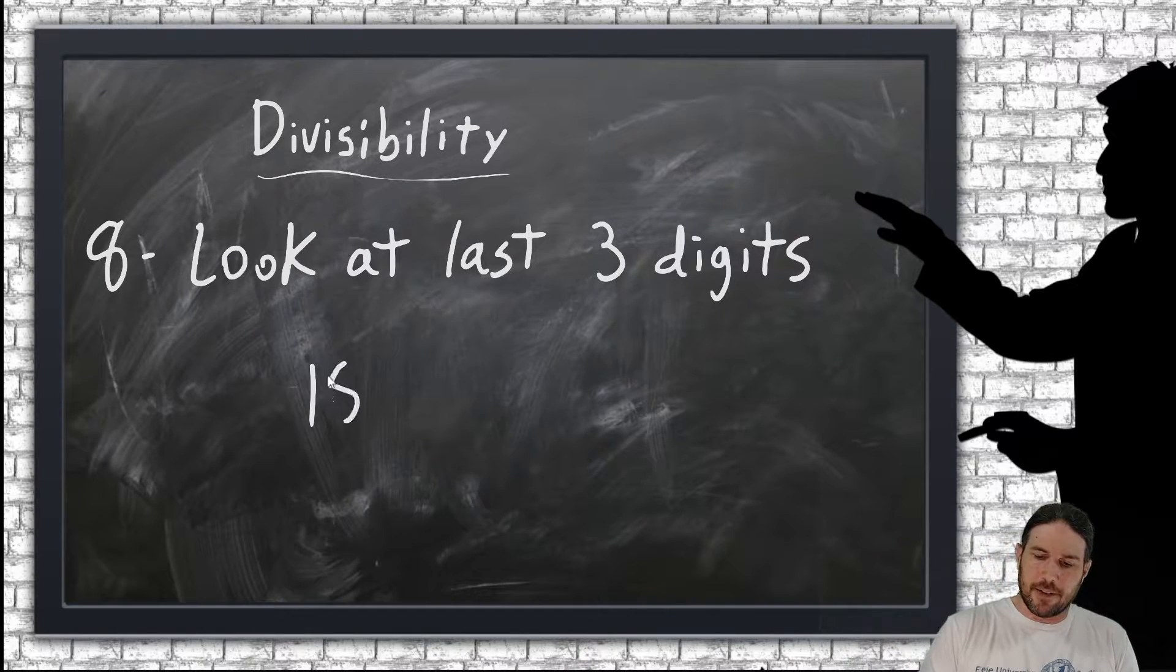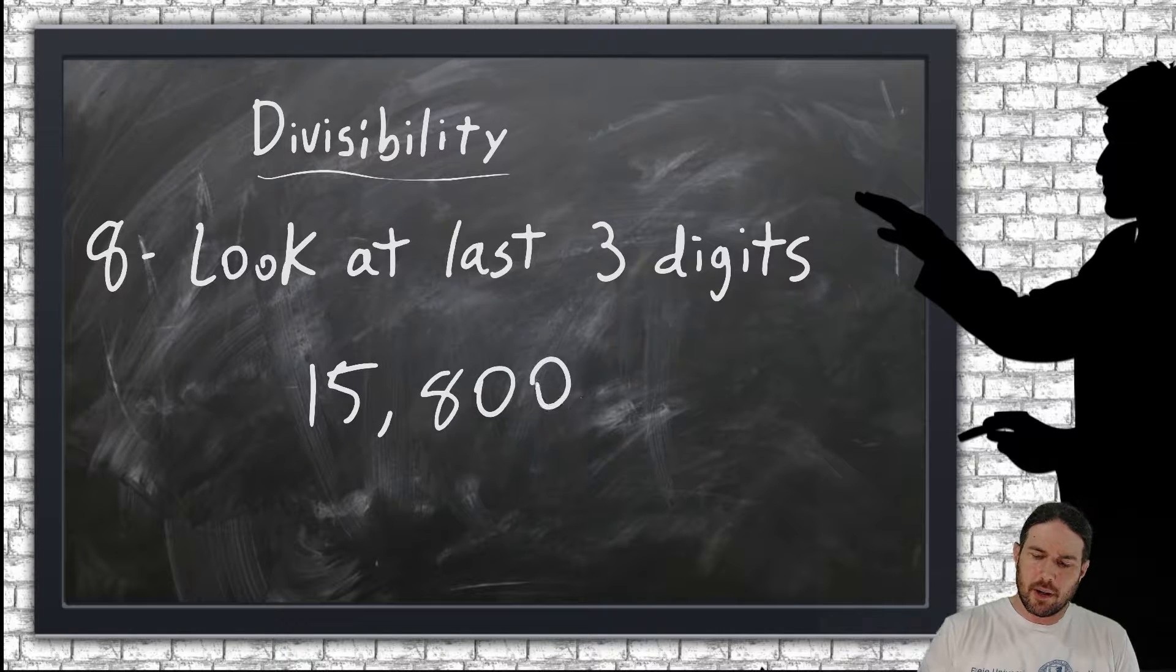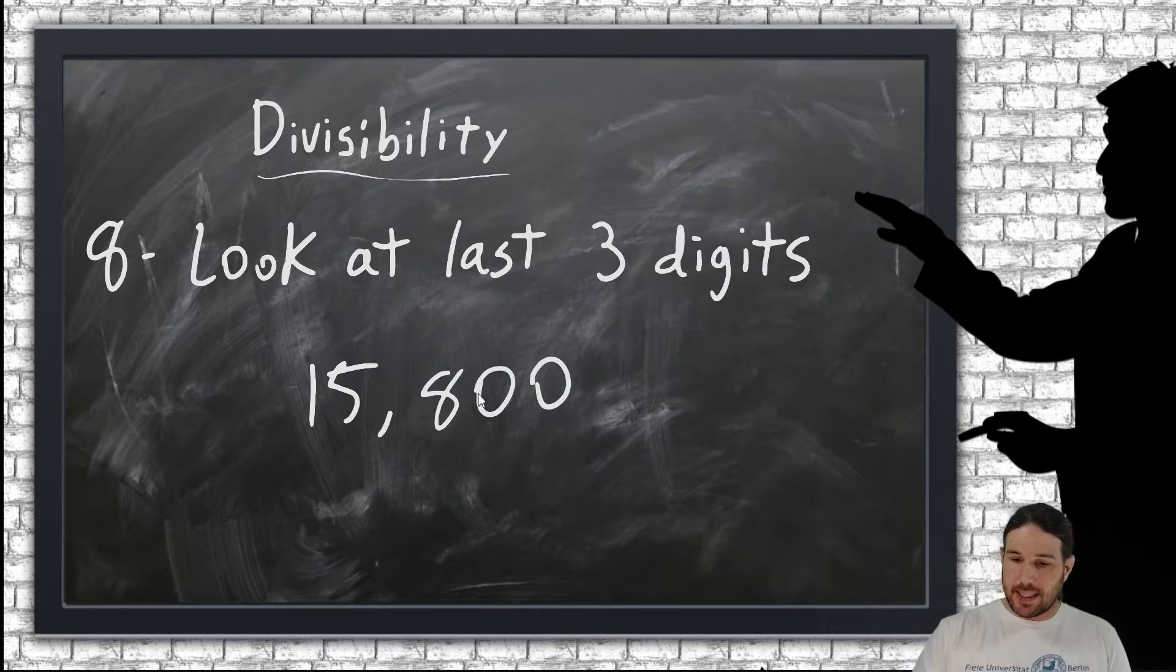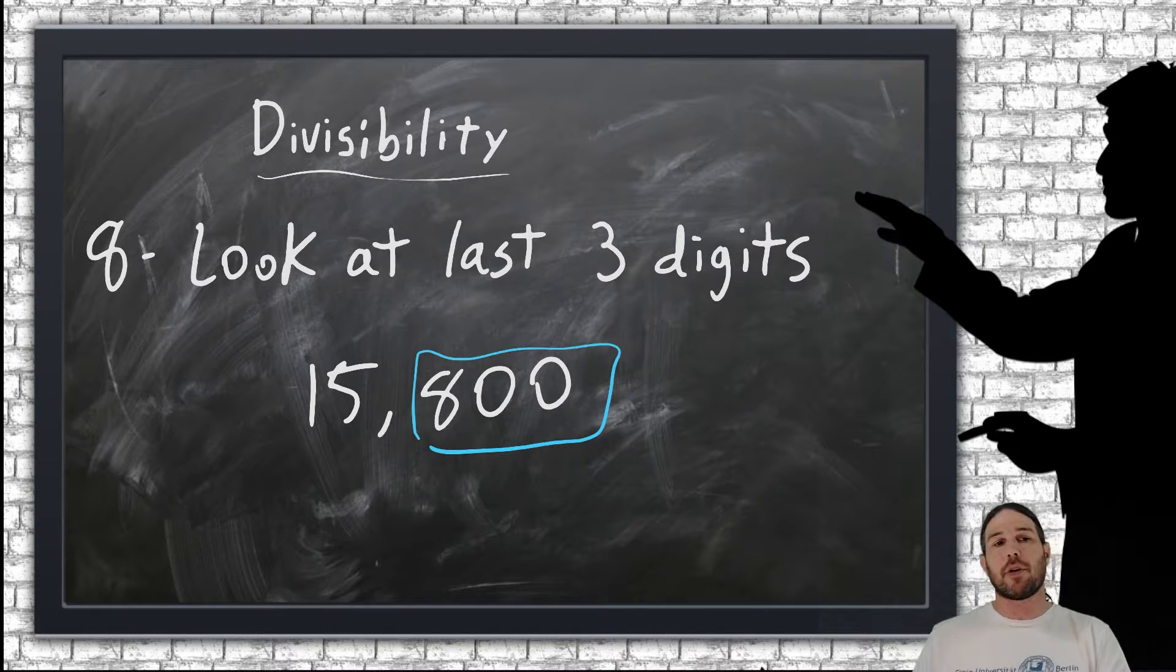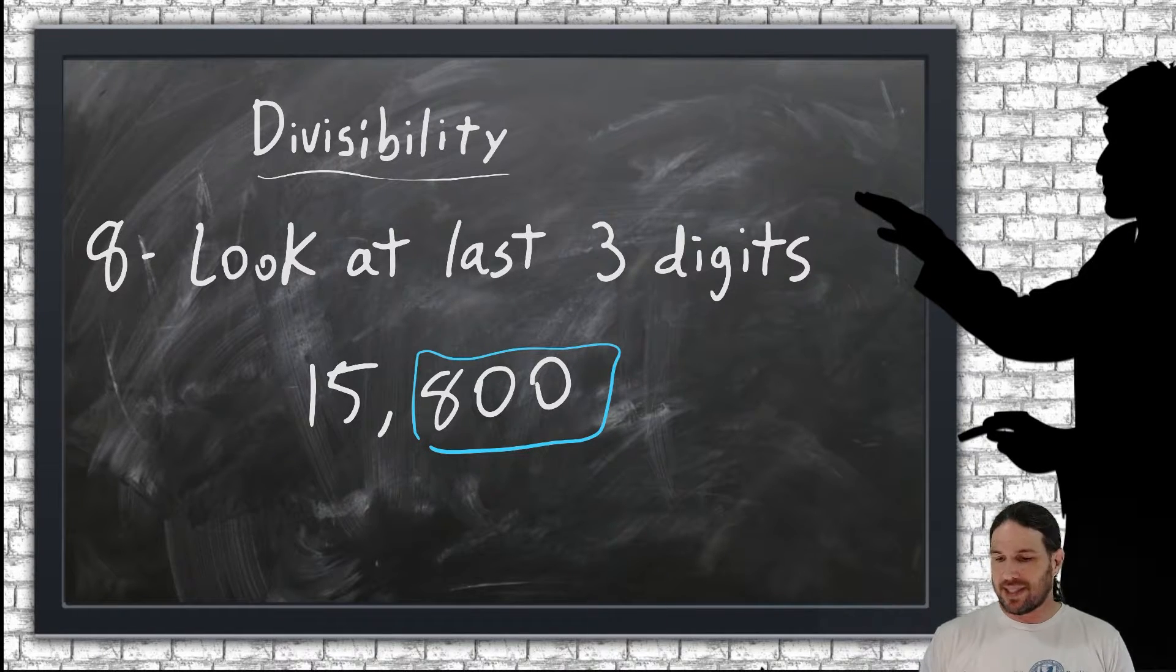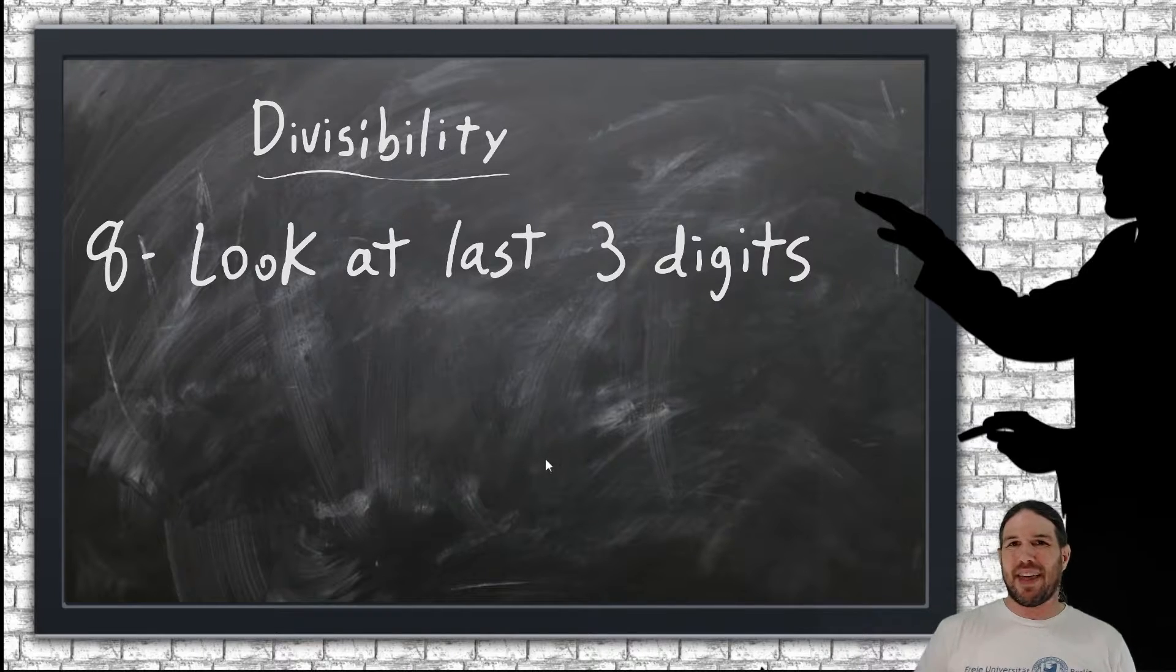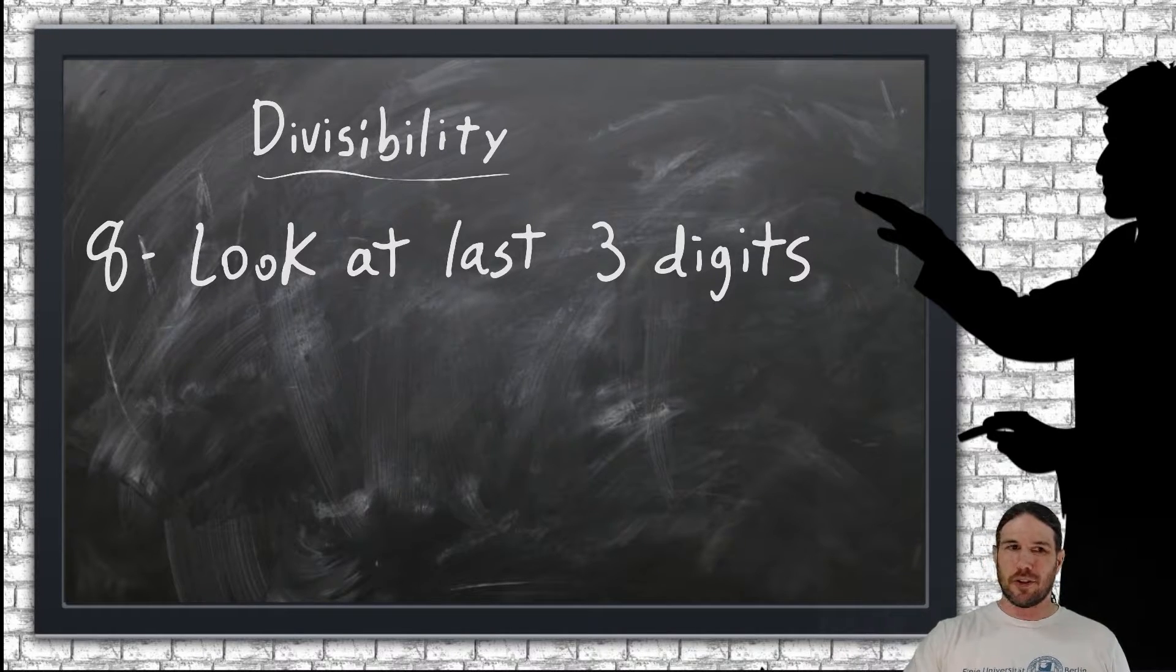Let's say I've got something like 15,800. Well, this one's pretty easy, because I know that this is a multiple of 8, right? 800 is 8 times 100, so the whole thing is a multiple of 8. Again, I don't find that one to be particularly useful overall.